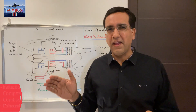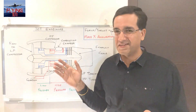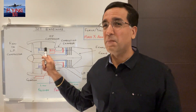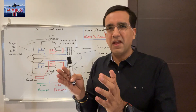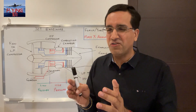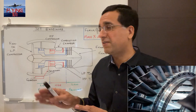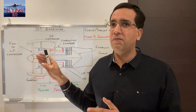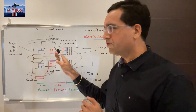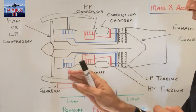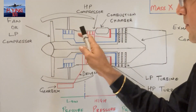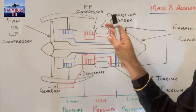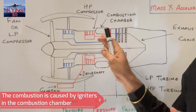Let's see what goes on in each stage and how they contribute to the generation of thrust. Air at atmospheric pressure enters the engine and is compressed. Jet engines commonly employ several stages of compressors leading to compression of air to very high pressures. The illustration here depicts three stages of compressor: the low pressure stage, intermediate pressure stage and the high pressure stage. This compressed air is then inducted into the combustion chamber where fuel is added and burned.